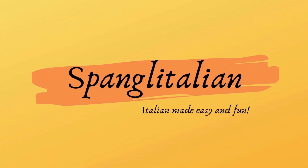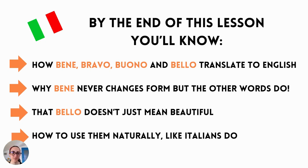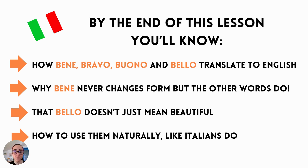Okay, so enough chitchat — bando alle trance, iniziamo! By the end of this lesson you'll know how bene, bravo, buono and bello translate to English, why bene never changes form but the other words do — so bene never becomes beni or beno or bena, it just stays as bene. You'll also learn that bello doesn't just mean beautiful, and you'll learn how to use them naturally like Italians do.